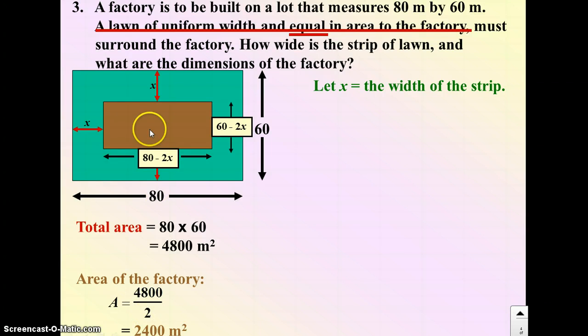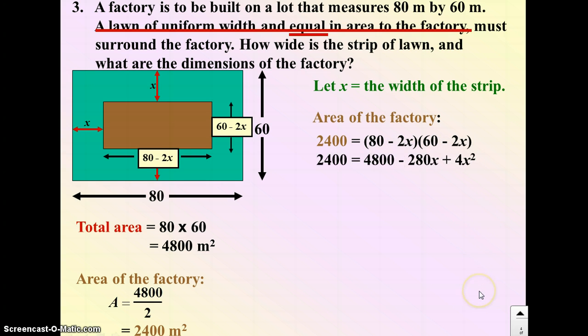Now that I know the area of the factory is 2,400 square meters, and I've got a length and a width for that shape, I can come up with an equation. So the area of the factory should be 2,400 equals length, 80 minus 2x, times width, 60 minus 2x. Expand that out: 80 times 60, 80 times negative 2x, 2x times 60, and negative 2x times negative 2x. And we get that expanded form, and if I set the equation equal to 0 by subtracting 2,400 from both sides, I get 4x squared minus 280x plus 2,400.